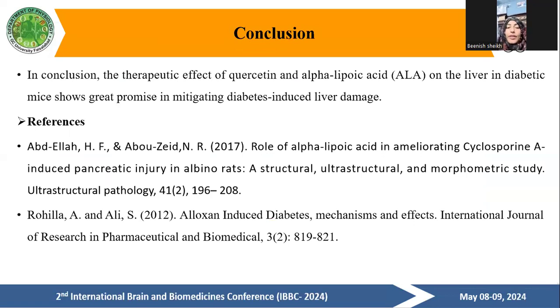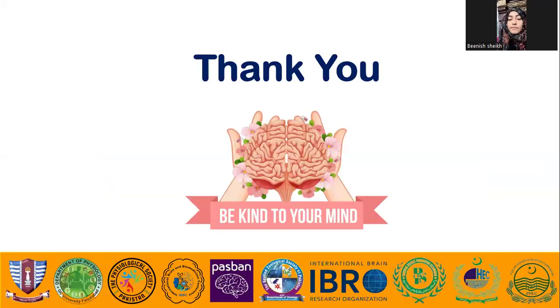In conclusion, the therapeutic effect of quercetin and alpha lipoic acid on the liver in diabetic mice shows great promise in mediating diabetes-induced damage. Thank you so much.